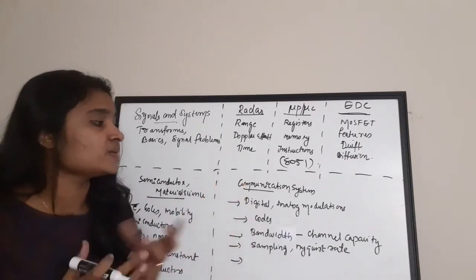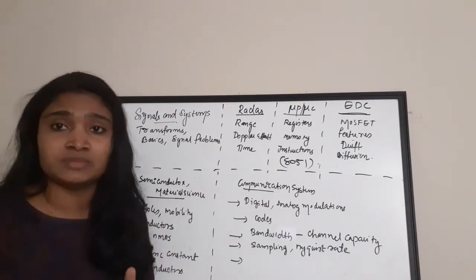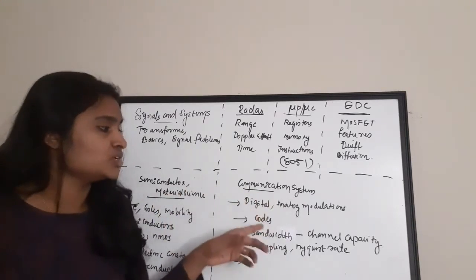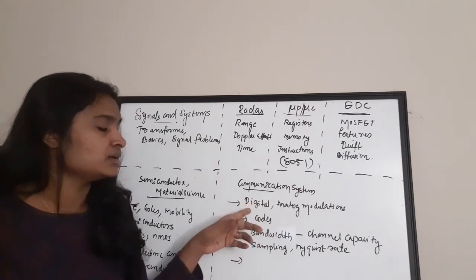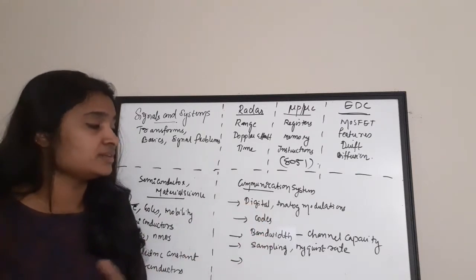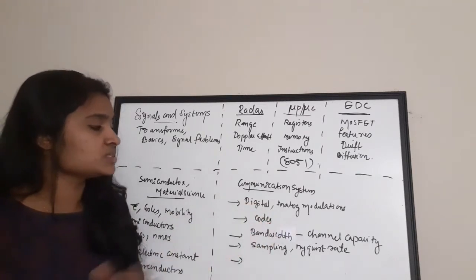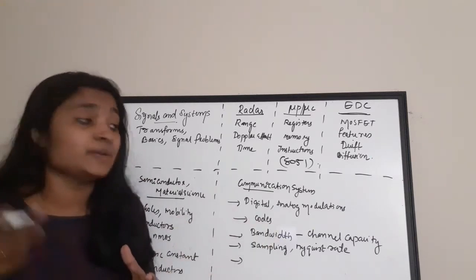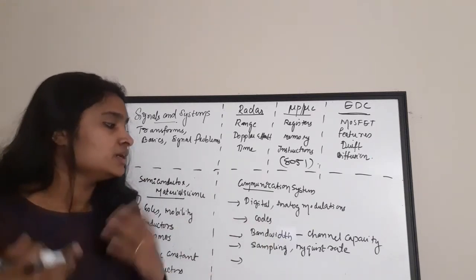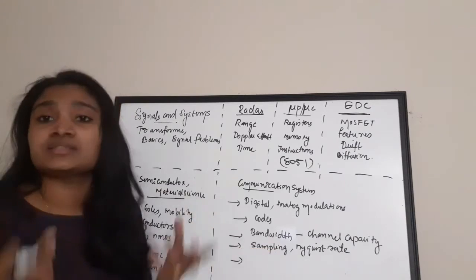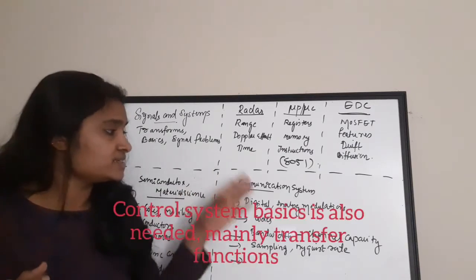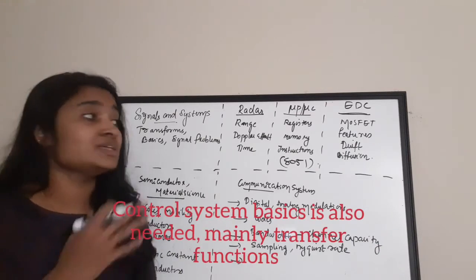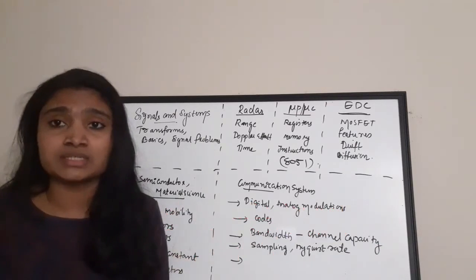In Communication Systems, mainly concentrate on modulation schemes and modulation index for both analog and digital modulations. Also study codes, code length, bandwidth, channel capacity, sampling rate, and the Nyquist rate.